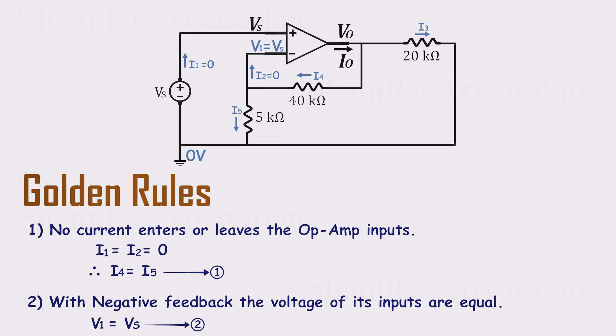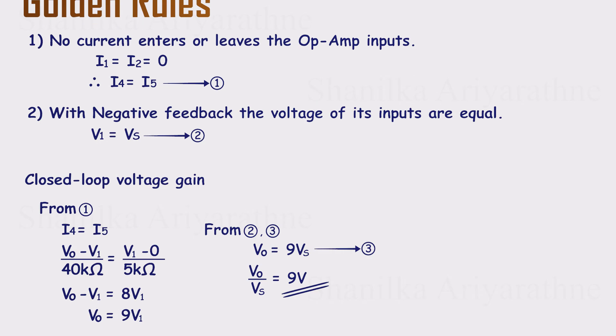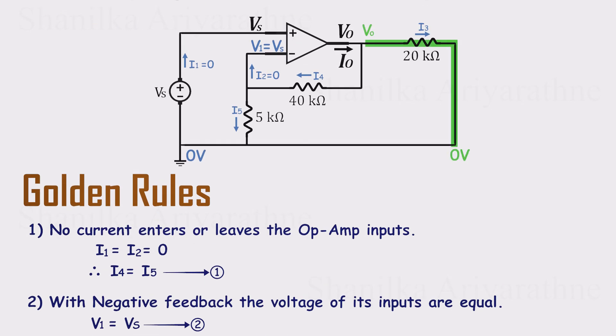Let's look back at the circuit. At the output node, the total output current I0 splits into two paths, I3 through the 20 kiloohm resistor and I4 through the feedback network. By Kirchhoff's current law, I0 equals I3 plus I4. Let's write those currents. For I3, the current goes through the 20 kiloohm resistor, so it's VO minus 0 over 20k. For I4, the current flows through the 40 kiloohm and the 5 kiloohm resistors in series. We can combine them into a single 45 kiloohm resistor, which makes I4 equal to VO minus 0 over 45k.